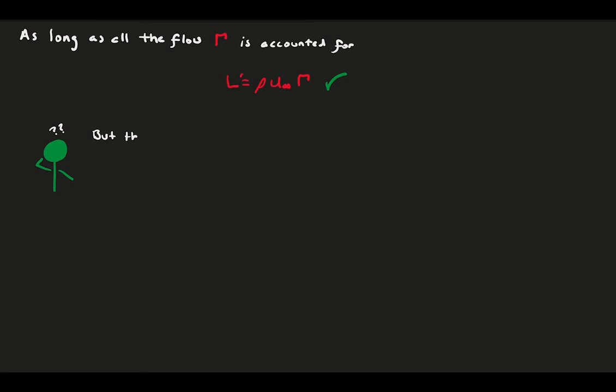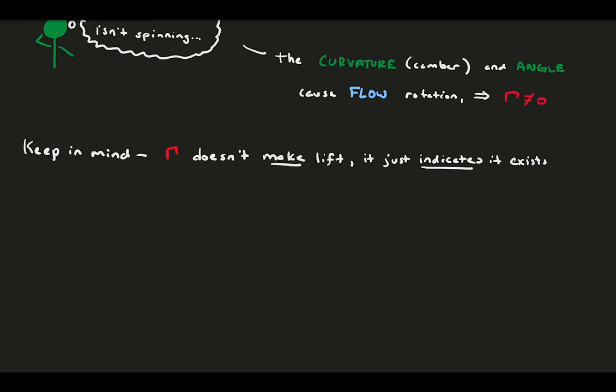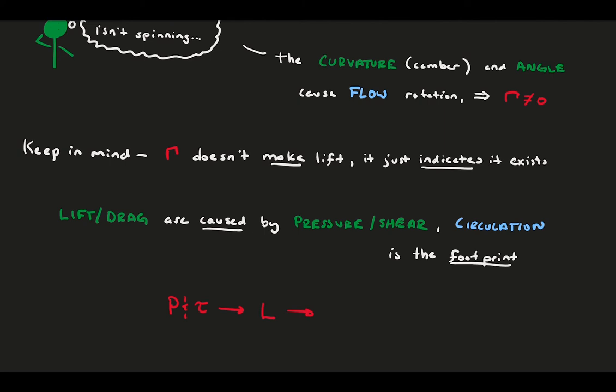You might be wondering how this works because our airfoil isn't spinning like the cylinder was. Well, the curvature of the airfoil and its angle cause the flow to rotate around the body, which adds this circulation. However, keep in mind I am usually careful to say that circulation indicates lift, it does not cause it. Lift and drag forces are made by pressure and shear stress distributions, and unless there's an odd body force, that's it. For the most part, surface stress is the only way a fluid can force an object. Circulation is merely the footprint of the lift. In a way, Kutta-Joukowsky is analyzing the size and depth of the footprint to say something about the pedestrian walking.